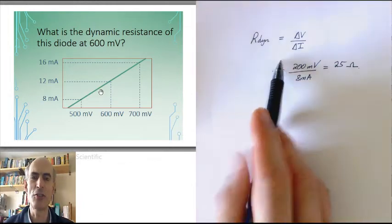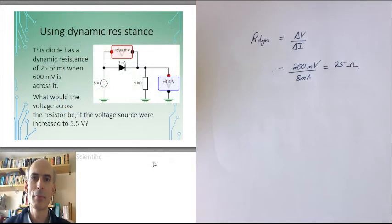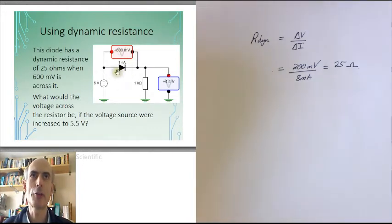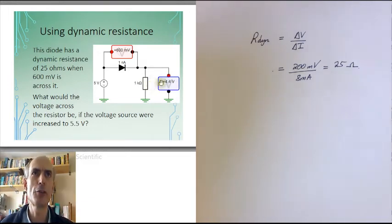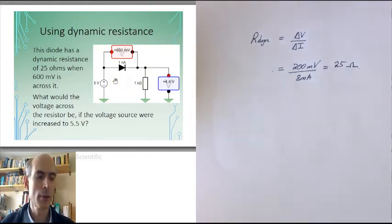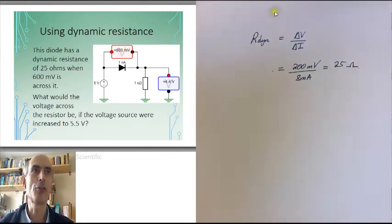This means that for small changes in current and voltage around this operating point, we can treat the diode as a 25 ohm resistor. For example, suppose that diode is in a circuit with 600 millivolts across it. There's 4.4 volts across a 1k resistor, so the current must be 4.4 milliamps. We're asked: what would the voltage across the resistor be if the voltage source was increased to 5.5 volts? We'll work in terms of changes in voltage and current, and for small changes we can assume the diode behaves as a resistor equal to its dynamic resistance — 25 ohms.